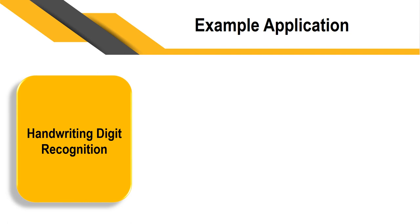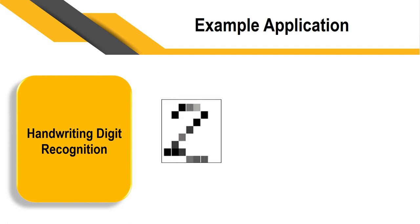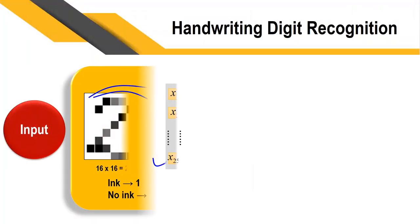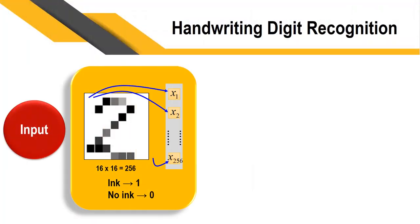Here I have given the digit two as an input, and this input will go to the machine. The machine learns with many algorithms — that is the performance of the machine — and after that the machine will learn that it is the number two.